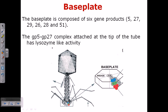The base plate is composed of six gene products: proteins 5, 27, 29, 26, 28, and 51. The base plate is an arrangement of different proteins that provides a base for the virus to sit or stand on. Tail fibers extend from the base plate proteins and are important for hooking onto and attaching to the host cell. Hook-like structures also come out from the bottom of the base plate, helping the phage adhere to the host cell through tight physical interactions.